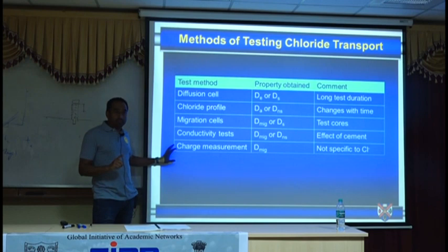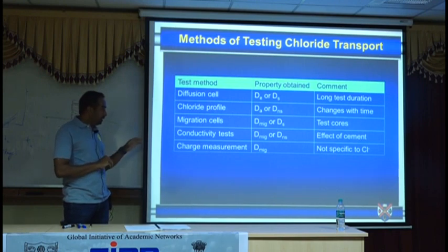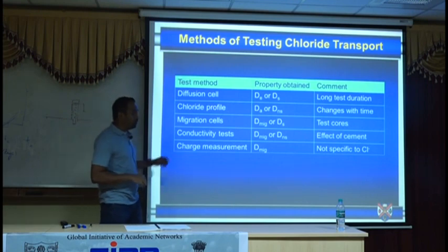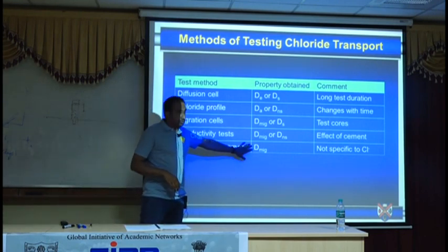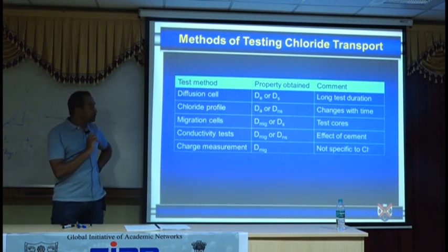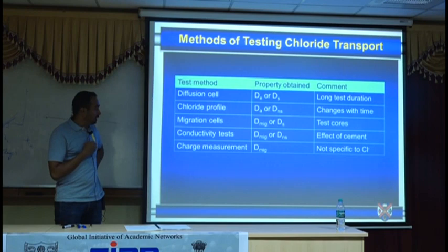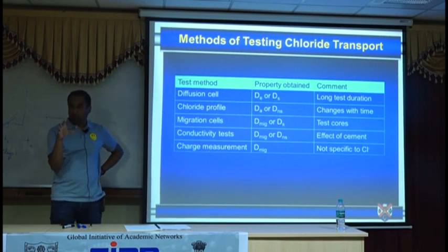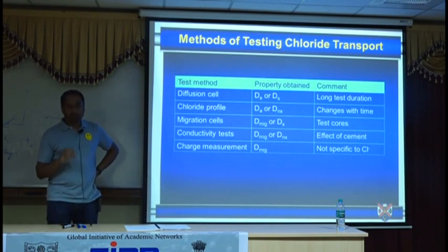The very common test is the American charge-based test: RCPT or RCMT — Rapid Chloride Migration Test. It does not directly give you a migration coefficient, though people have extended it to obtain one. I'm not a fan of RCPT; in my opinion, you can use it for comparing concrete mix A versus B versus C if they are comparable. Otherwise, it shouldn't be used, because if you use a lot of chemical additives or fibers in your system and your cement systems are differently conductive, it will give you confusing and wrongly misleading results.